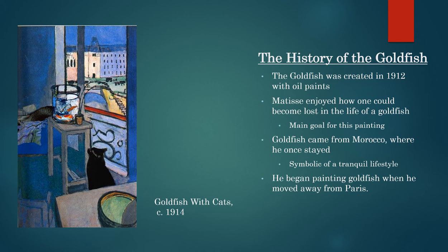What did he find so interesting about Goldfish? The Goldfish painting was created in 1912 after he moved into a more secluded life away from Paris. Matisse enjoyed watching goldfish and found it relaxing to get lost in their world. He hoped people would also get this feeling when viewing his piece. The artist once traveled to Morocco, where goldfish came from at that time.